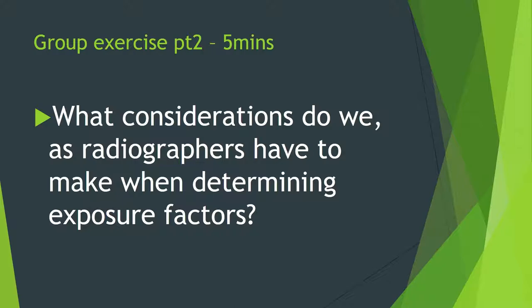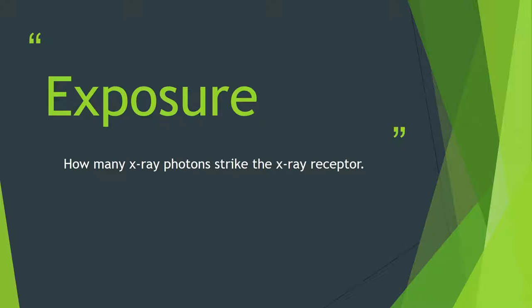Welcome back, people watching online. What considerations do we have to make as radiographers when determining exposure factors? What do we mean by an exposure? The exposure factors that we're setting determine an exposure. An exposure is basically how long the patient and/or an image receptor is exposed to radiation — how many X-ray photons are going to strike the receptor. One of the obstructions to those photons is the patient or the body part that you're X-raying.